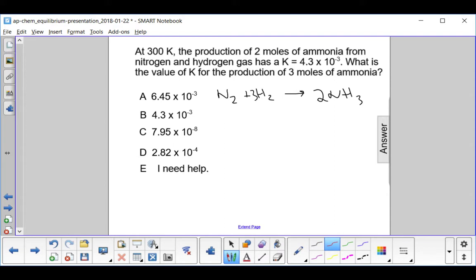If I want to produce 3 moles of ammonia, I have to multiply this by 3 halves, and of course I'd multiply these two coefficients by 3 halves as well. That's how I get to my 3 moles produced of ammonia.